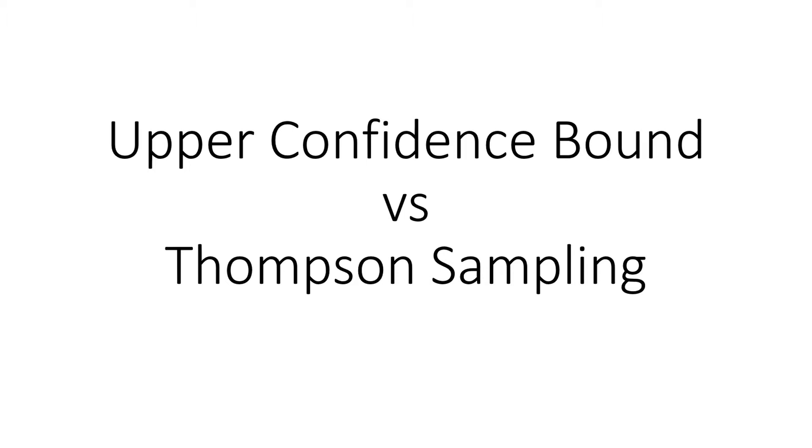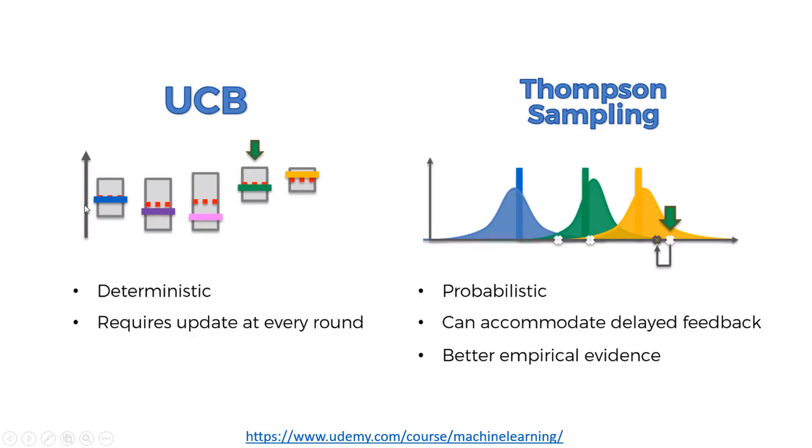We've used both algorithms to solve the multi-armed bandit problem. This slide shows the UCB algorithm, the Upper Confidence Bound algorithm, and this is for the Thompson Sampling algorithm. This is the only slide we're going to go through in this video.